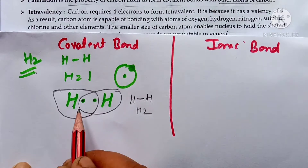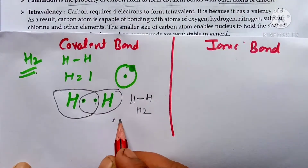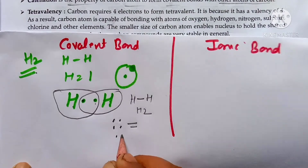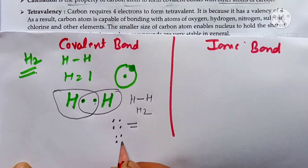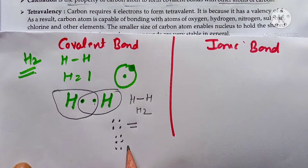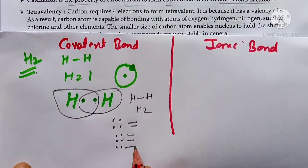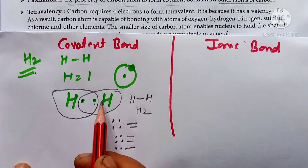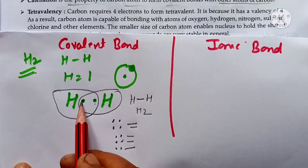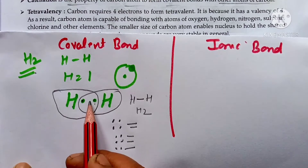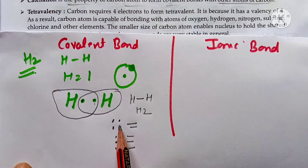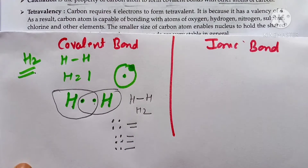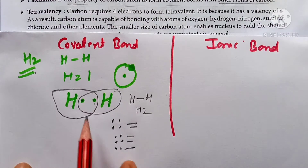When 2 electrons are shared, a single bond is formed. When 4 electrons are shared (2 from each side), a double bond is formed. When 6 electrons are shared (3 pairs), a triple bond is formed. So hydrogen-hydrogen forms a single bond. Double bonds and triple bonds are also possible in carbon compounds.